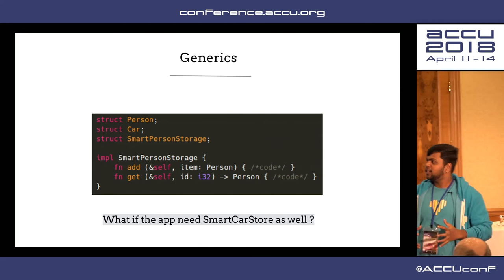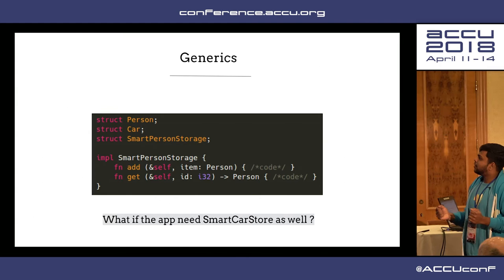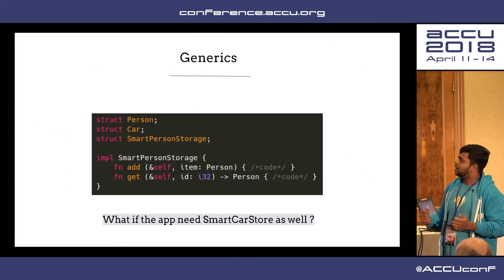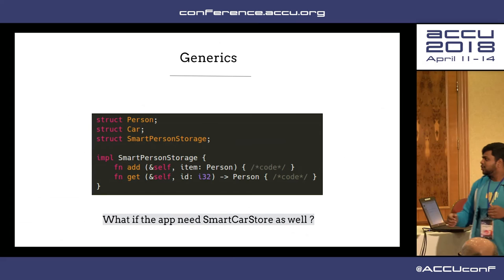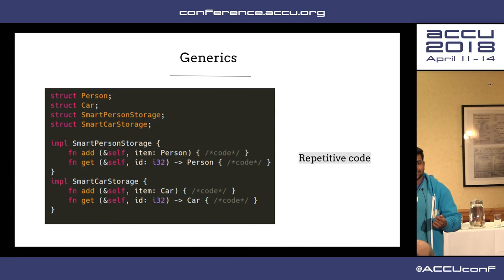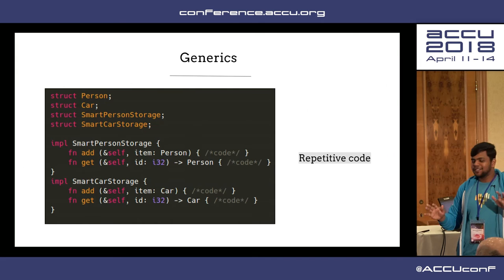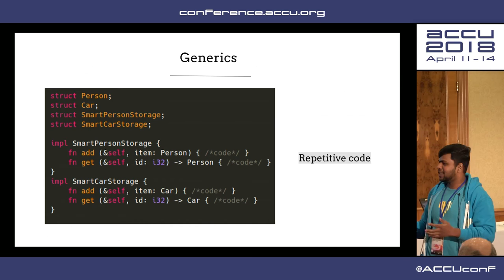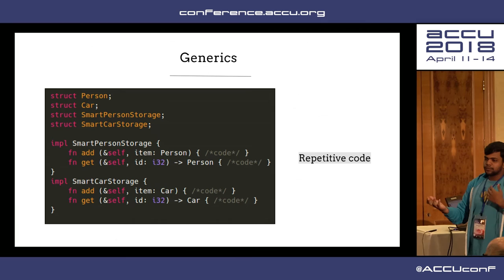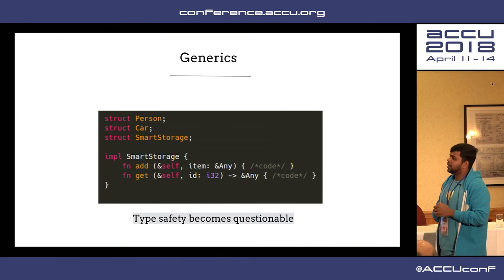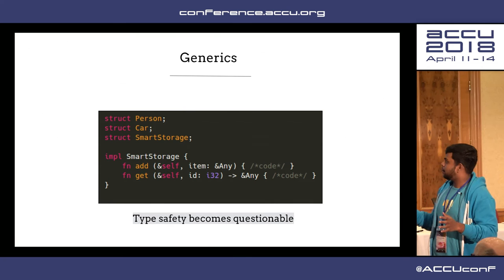Generics is another interesting topic that really helps you write efficient code. Let's say I have three structs — person, car, and smart storage — and I want particular methods for smart person storage and smart car storage. As programmers, we know we should not repeat our code — DRY is something most organizations enforce. That's where generics comes into play. You could just say I'm going to implement a smart storage type into which I can give any kind of types. You can bound a particular type with a trait, and the moment you see that syntax in the Rust language, check the documentation to see what trait is being called — it gives a lot of readability while reducing your number of lines of code.